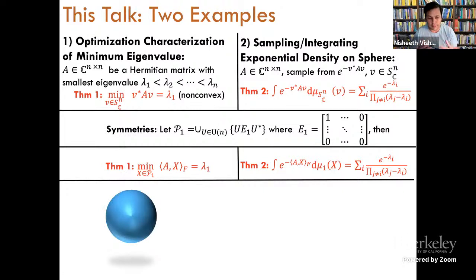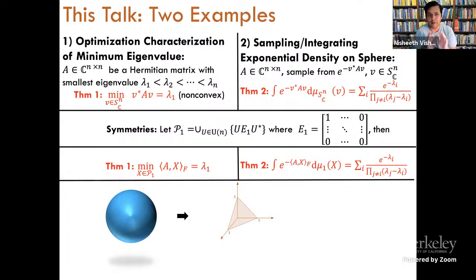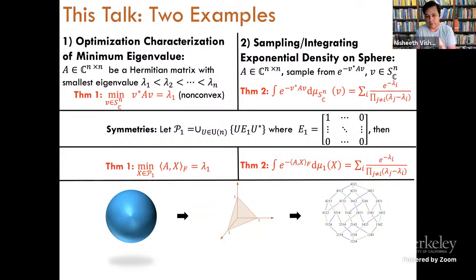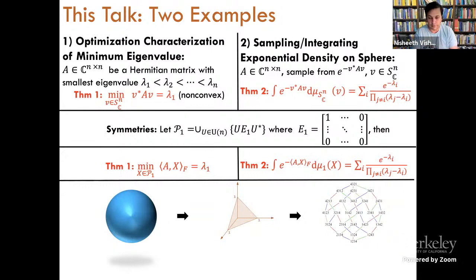The proof strategy in both cases works as follows. There'll be some non-convex object — illustrated using the boundary of a sphere. The first step converts the problem, whether optimization or sampling, to some kind of a convex polytope — in this case, the probability simplex. Subsequently we further go from the polytope to some discrete object, in this case the symmetric group S_N. You'll see this happen two times in this talk: we start from a non-convex but symmetric set, translate to a polytope, and then from a polytope we go to a discrete set.